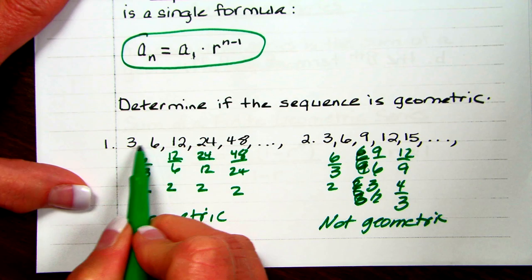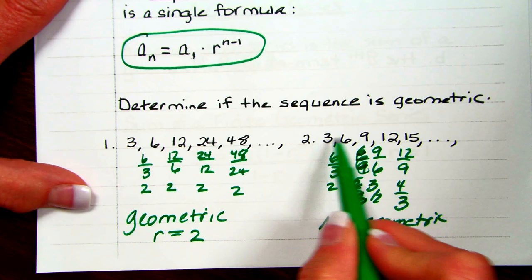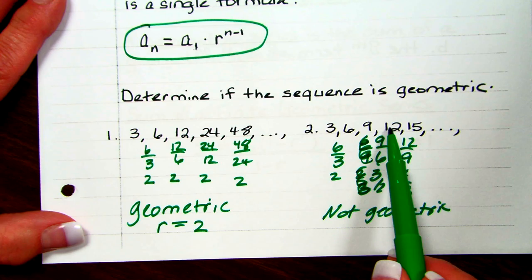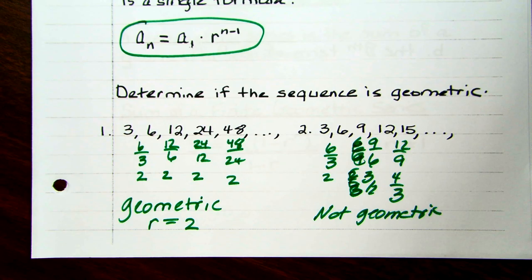You're taking the second term dividing it by the first, the third dividing by the second, the fourth dividing by the third, and so on to determine if there's a common ratio. This one's not geometric — actually, if you look at it, it's plus 3, plus 3, plus 3. So this one's actually arithmetic. And that's how you determine.